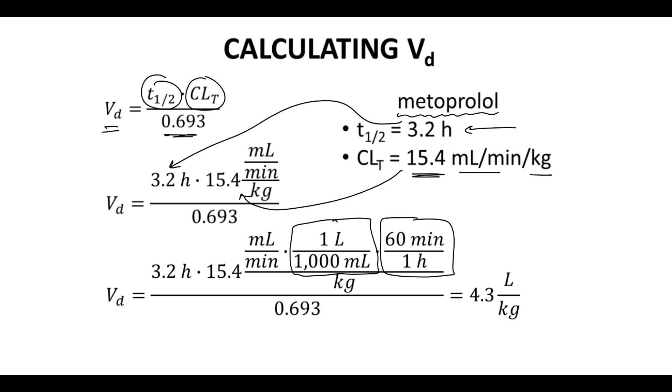Out pops at the end our number or volume of distribution of 4.3 liters per kilogram. That's liters of plasma per kilogram of patient mass.